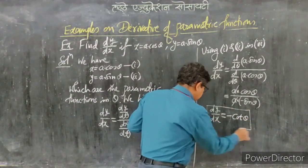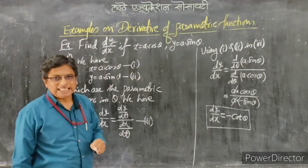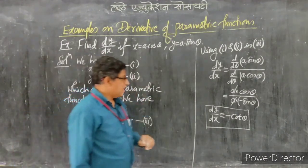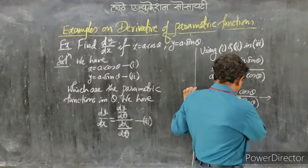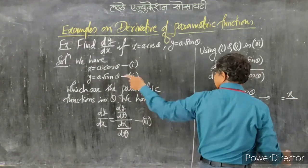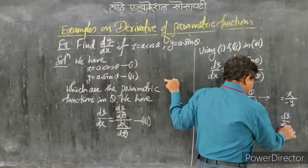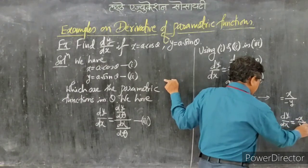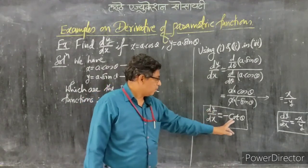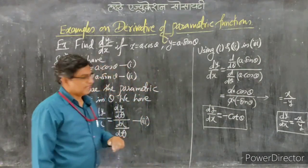So the answer is dy/dx = −cot(θ). In case of MCQ, you may get a different form. Since x = a·cos(θ) and y = a·sin(θ), we can also write dy/dx = −x/y. Both answers are correct. That is it for this example.